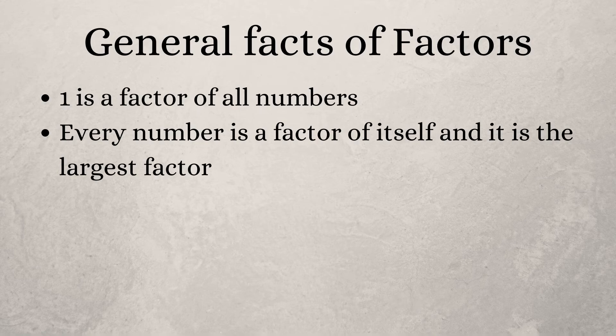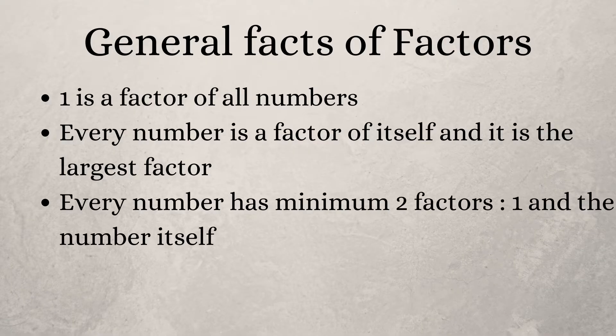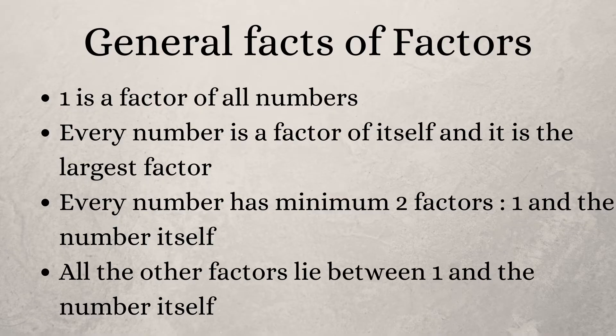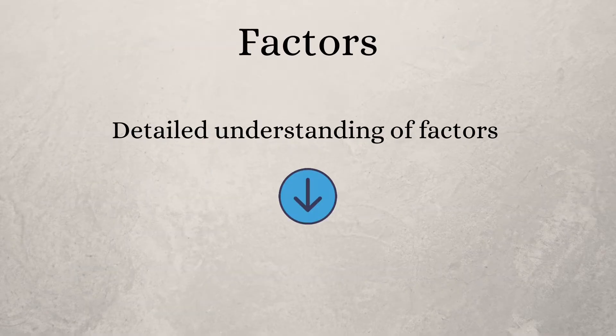Then every number is a factor of itself and it's the largest factor. So every number has at least two factors: one and the number itself. Apart from these two, the other factors fall in between these numbers.